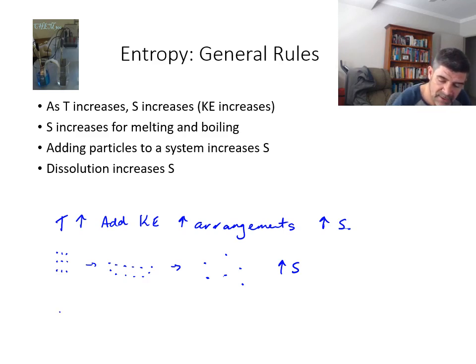If we have a certain number of particles in a system, and then we decide we're going to add other particles to the system, then we're increasing the arrangement of particles, or at least the potential ways in which these particles could be arranged, and therefore we are going to increase our entropy.